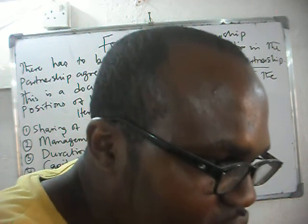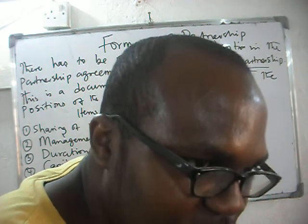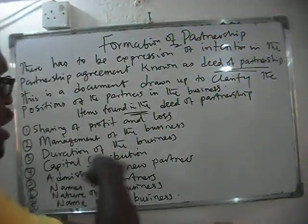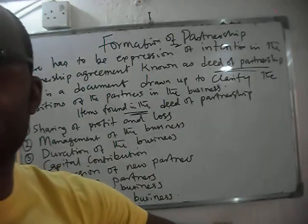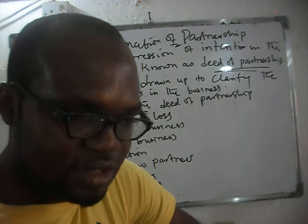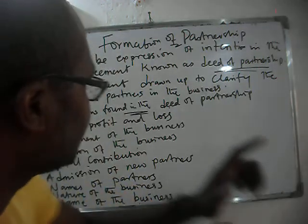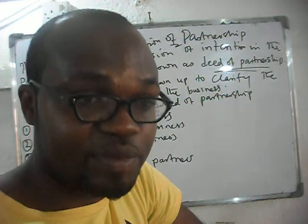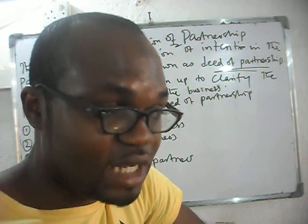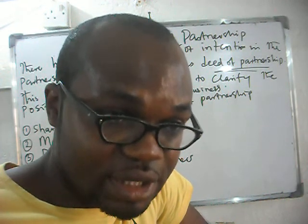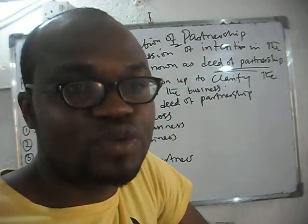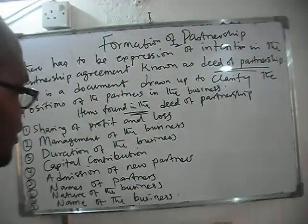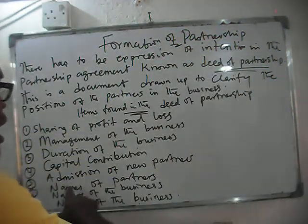Management of the business has to be written there — for example, Toby is the general manager and Austin is the technical manager, and these are the people we are going to employ to help manage the business. Duration of the business — if it is going to last 10 or 20 years, it has to be there. Capital contribution: since Toby wants more profits, if the business needs 3 million to start, Toby brings 2.1 million and Austin brings 900,000. That has to be stated in the deed of partnership.